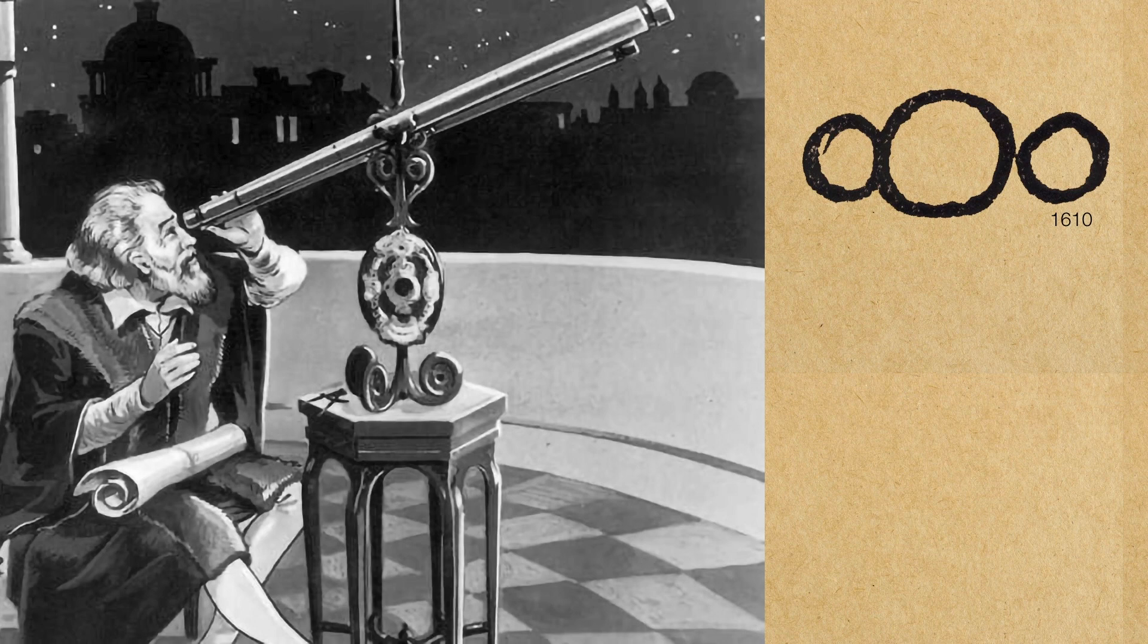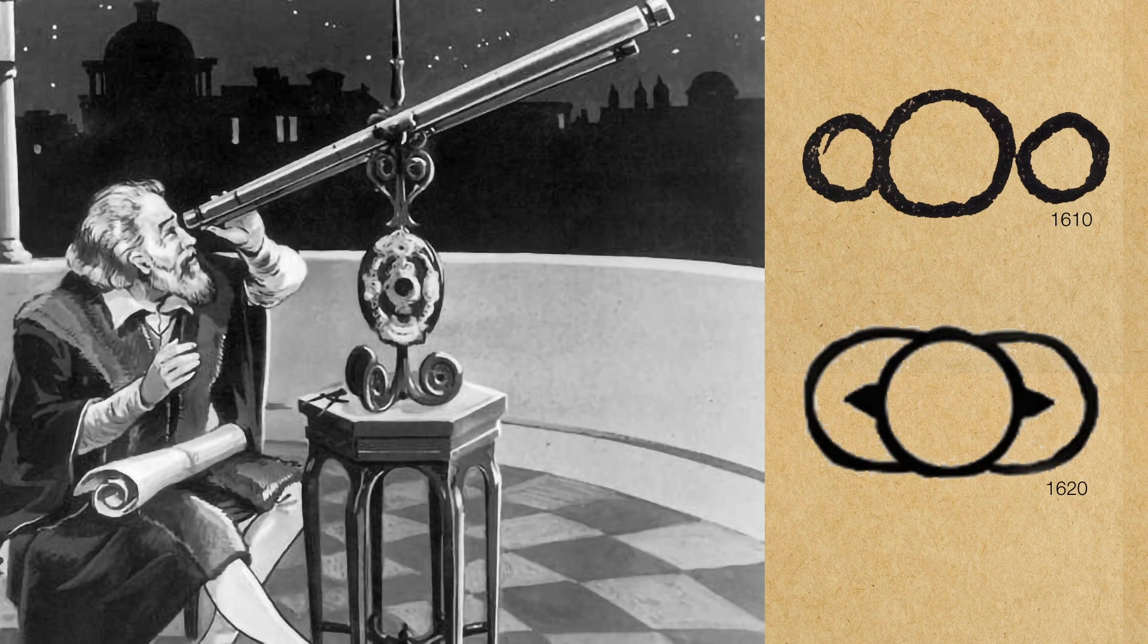He didn't know exactly what they were. He suspected perhaps these could be a pair of moons that just happened to orbit on both sides of Saturn. But as his telescopes improved, his opinion of the objects surrounding Saturn changed. He thought perhaps these were handles of some sort. So maybe Saturn was kind of like a double-handled jug of some type.